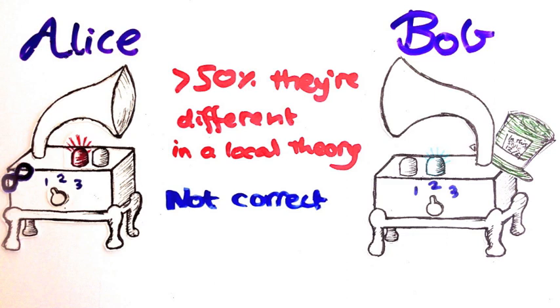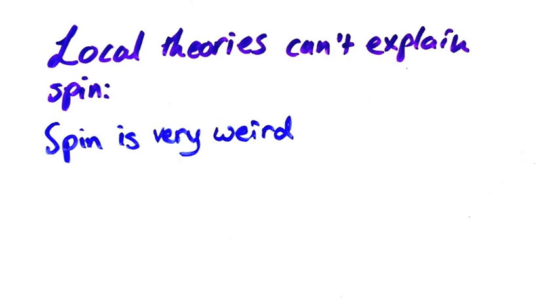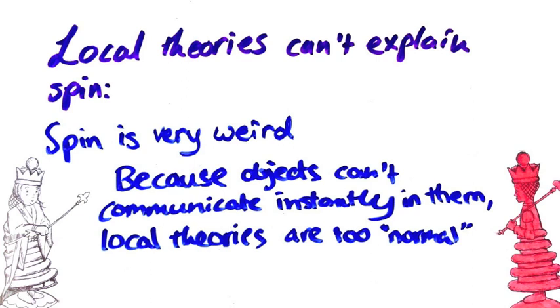So you see, local theories just don't have the right tools to explain spin. I think that's because spin is a crazy phenomenon that is nothing like the classical properties of matter that we're used to. On the other hand, any local theory is quite classical because it assumes particles can't affect each other instantly over distances, which really limits how weird it can be. And in this case, it's just too classical to explain something like spin.